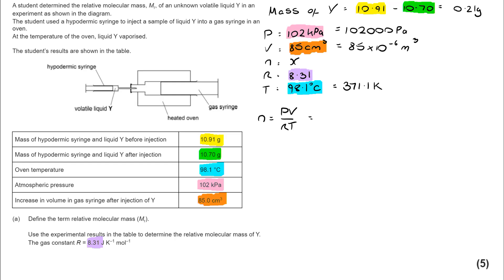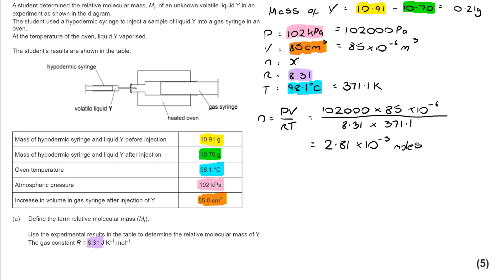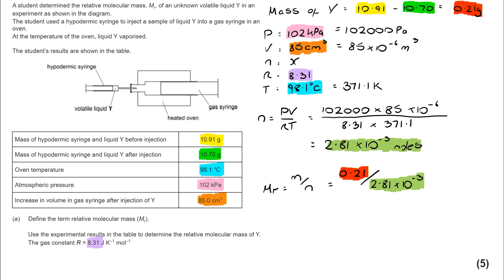I've now done those conversions and I can calculate N. I write out my expression: N is PV over RT, and I can put those figures in. Once I've done that, I'm able to calculate my mole value — 2.81 × 10⁻³. And you'll remember, way back at the start of this question, you worked out the mass of Y. We now know the moles of Y, so we can work out the MR. Putting those figures in, I end up with an MR of 74.7.